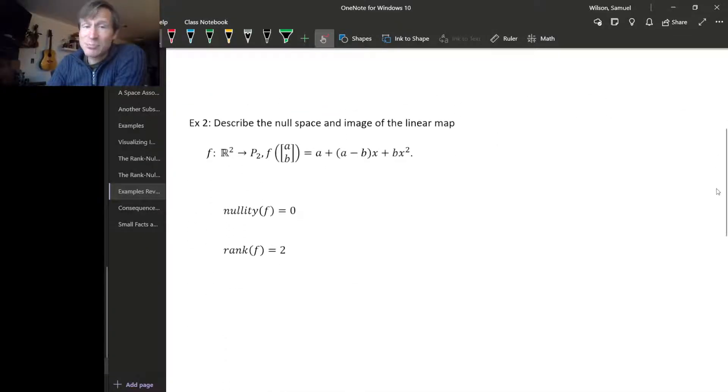The next example we looked at was this map from R² to P₂ that takes (a,b) to this polynomial. The nullity we worked out was 0, so the only vector that gets sent to the 0 polynomial is the 0 vector. The rank, we found a basis for the image, and we found the basis had two polynomials in it, two linearly independent polynomials. So the dimension of the image was 2.